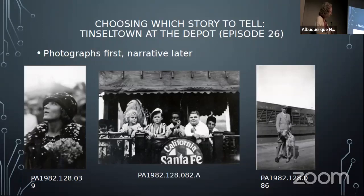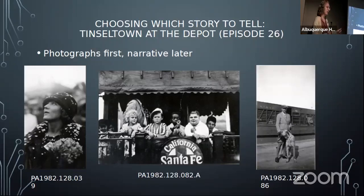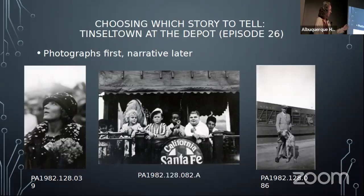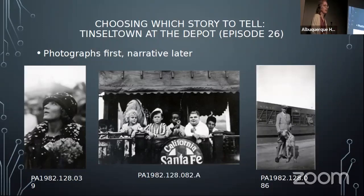The newest episode is called Tinseltown at the Depot — a collection of photographs taken of celebrities in the 1920s at the train depot at the Alvarado Hotel, taken by William Steel Dean. Many were identified: Mary Pickford, Our Gang, and Rudolph Valentino, who exercised his dog named Centaur Pin Dragon up and down the train platform. I needed to find out about William Steel Dean in order to actually tell the story.